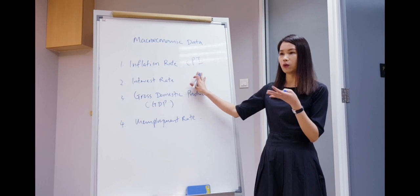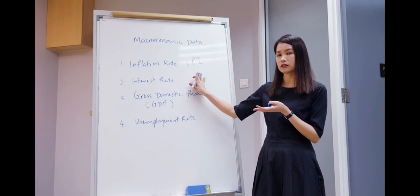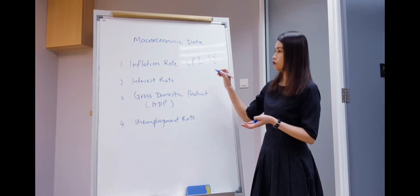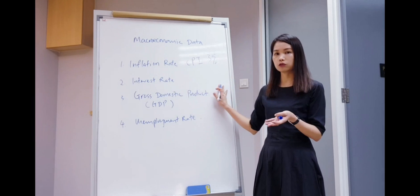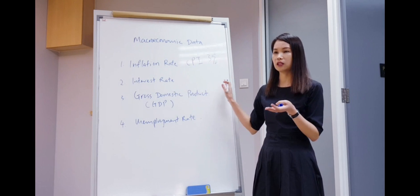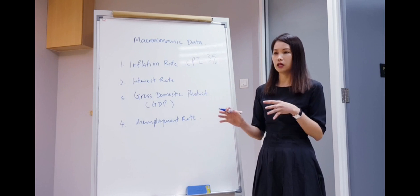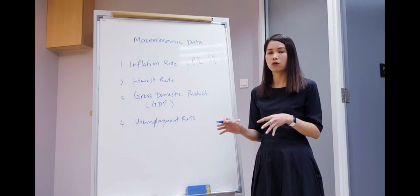So this consumer price index measures the general price level of a country. What level of consumer price index is reasonable? Usually we are looking at 3%. In an economy, in a country, it is best that we keep the inflation rate below 3%. Then we will see that this country is managing their price level quite well.